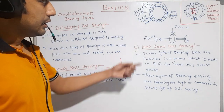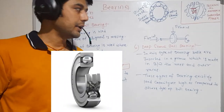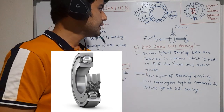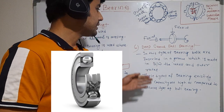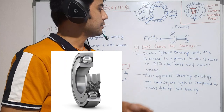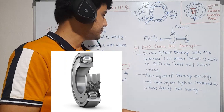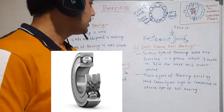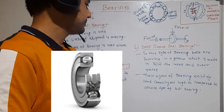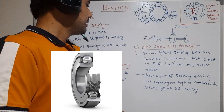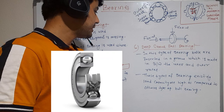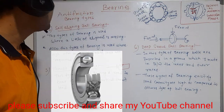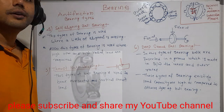The sixth type is the deep groove ball bearing. In this type, balls are inserted in a groove made between the inner and outer races. This type of bearing has a higher load carrying capacity compared to other ball bearings.